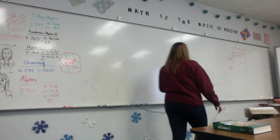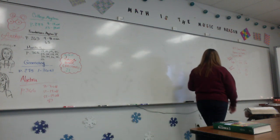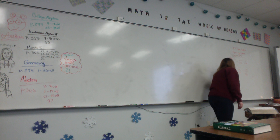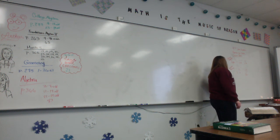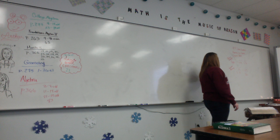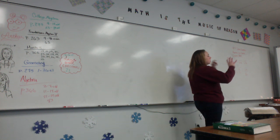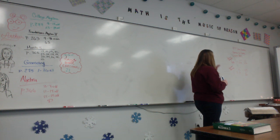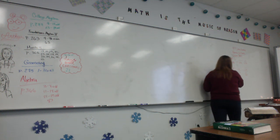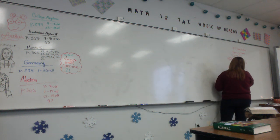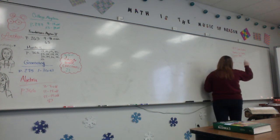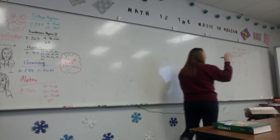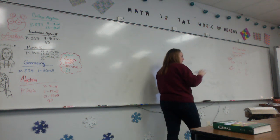Section 4.5 is solving quadratic equations by finding the square root. You have the product property, which tells us that the square root of A times B can be separated out — you can take the square root of A and multiply it by the square root of B. The quotient property tells us the same thing: if you have A divided by B under a square root sign, you can separate them out and solve.